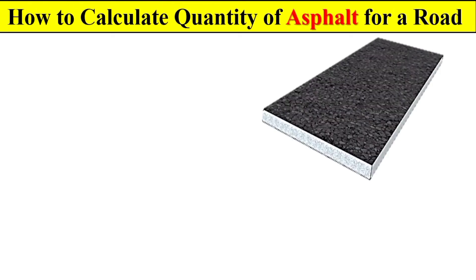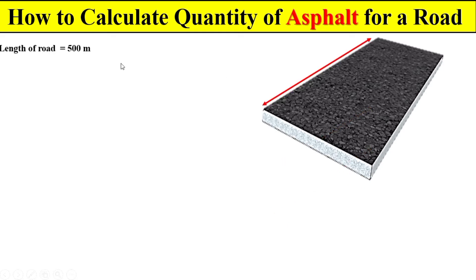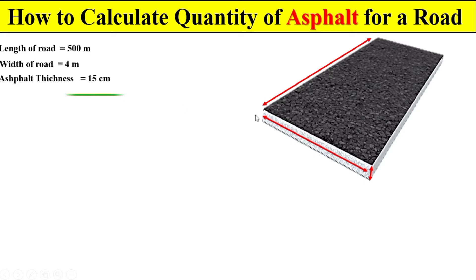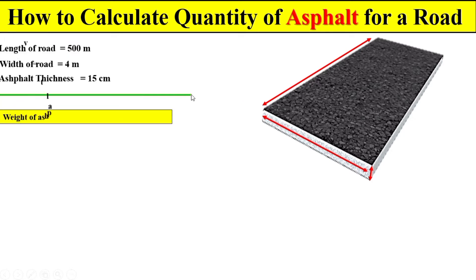Assalamu alaikum, dear students. I hope you will be fine. In today's topic, I am going to teach you one of the special topics related to quantity surveying, and our topic is how to calculate the quantity of asphalt for a road. So dear students, let's suppose the length of the road is 500 meters, the width of the road is 4 meters, and the thickness of asphalt provided in this road is 15 centimeters. Now, if we are interested to calculate the total quantity of asphalt in this road, then remember: